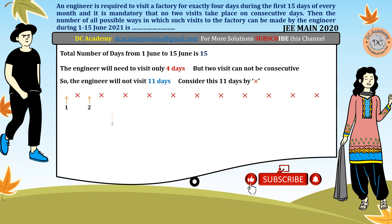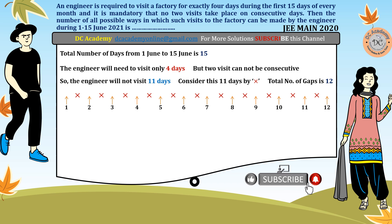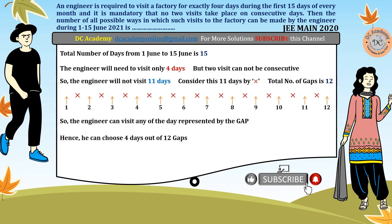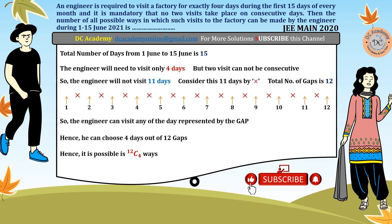Between 11 crossed-out days, there are 12 respective gaps. If the engineer selects 4 days out of these 12 gaps, no two visits will be consecutive. Therefore, the number of possible ways he can schedule his visits is 12C4.